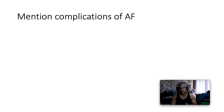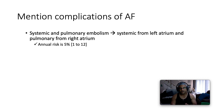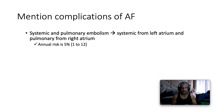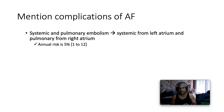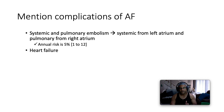The complications of atrial fibrillation — the headline complication is embolism: systemic and pulmonary embolism. Systemic embolism comes from the left atrium; pulmonary embolism from the right atrium. The annual risk is around 5%. Heart failure is the other important complication.